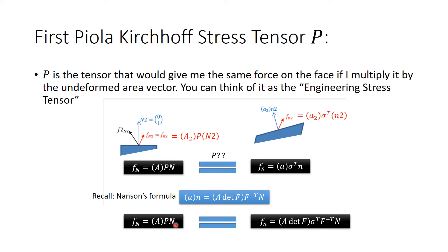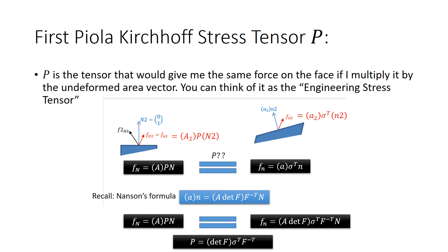Because the vector n is arbitrary, the two linear transformations P and sigma transpose F negative transpose must be equal. Therefore, the first Piola-Kirchhoff stress tensor P is equal to the determinant of F multiplied by the transpose of the Cauchy stress sigma, multiplied by F to the power of negative transpose.